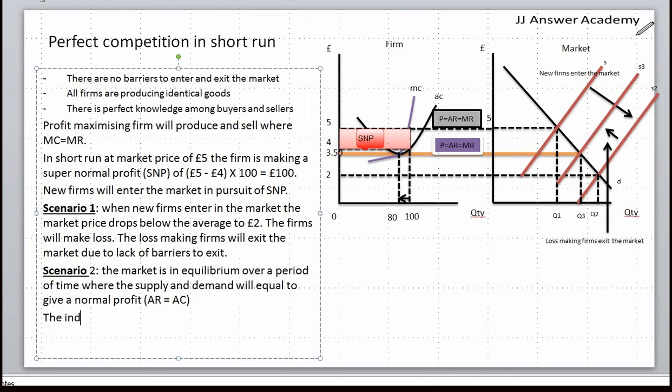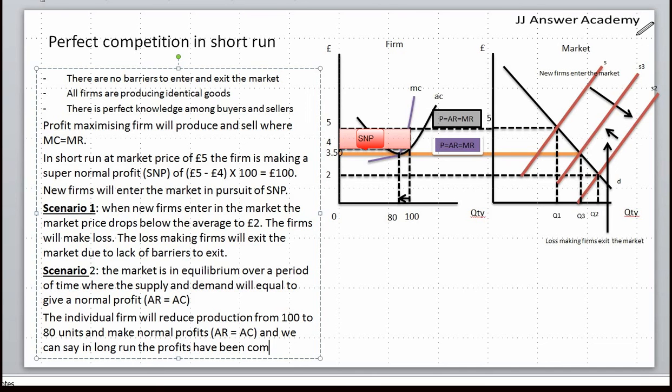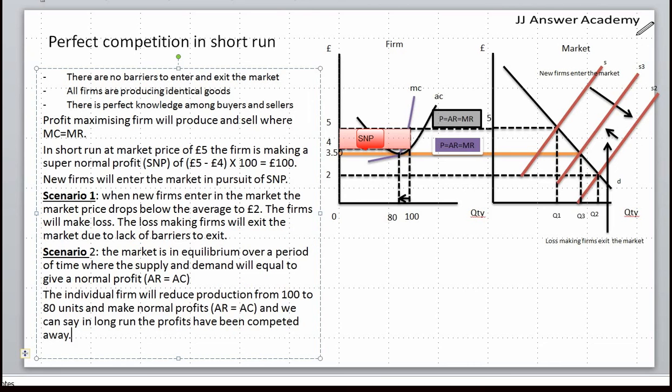And we can say in the long run, profits have been competed away. The final price is 3.50, so that is what they are getting as a price, and that is what they are incurring as an average cost. AC equals AR.